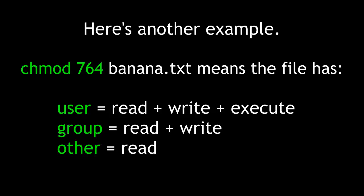Here's another example. chmod 764 banana.txt means this text file has for user: read, write, and execute; for group: read and write; and for other: read only.